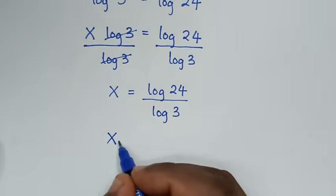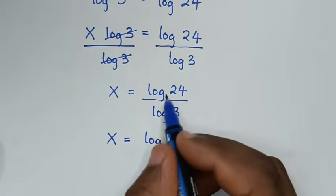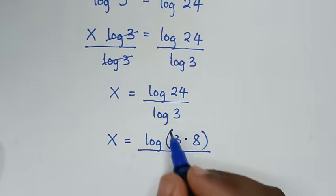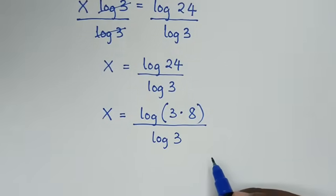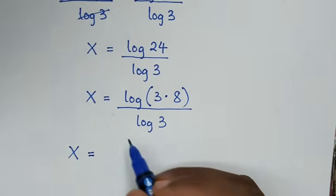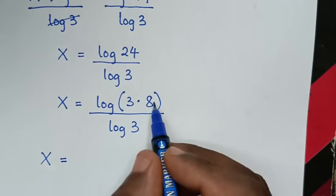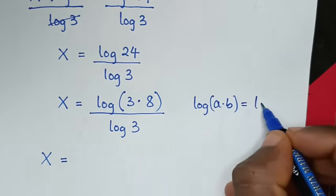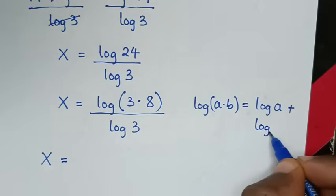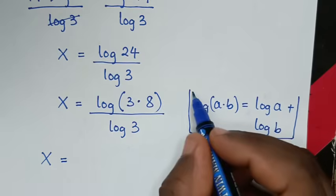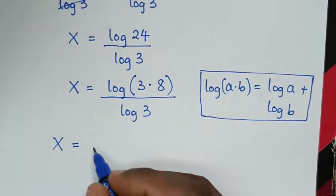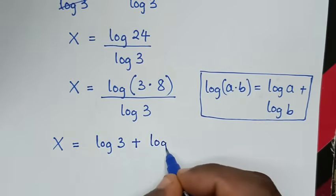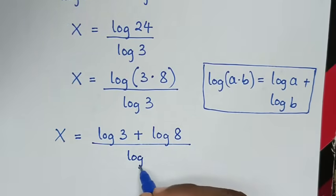Then here x is equal to log of 24. Now 24 is the same as 3 times 8, so log of 24 over log of 3. Then we apply the rule: log of a times b is equal to log of a plus log of b. So it will be log of 3 plus log of 8, all over log of 3.